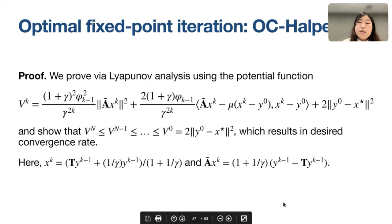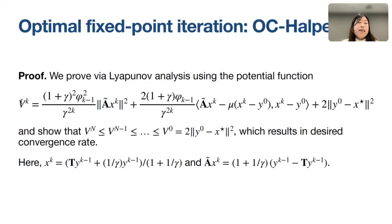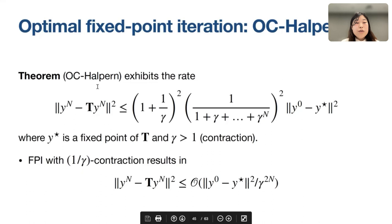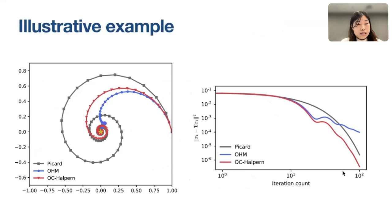The proof uses Lyapunov analysis. We define a potential function Bk — a sequence indexed by k — and show that Bk is monotonically non-increasing. From the fact that B_N ≤ B_0, we obtain the desired result where the fixed point residual is upper bounded by the convergence rate expression.